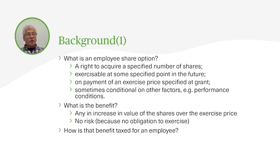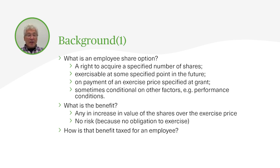Turning to background: what is an employee share option? An employee share option is a right to acquire a specified number of shares, generally in your employing company or the parent company of the employing group. An option is exercisable at some specified time in the future — by exercise I mean that you pay your price and receive your shares. The exercise price is specified at grant, and sometimes exercise is also conditional on performance conditions. The benefit to the employee is any excess in the value of the shares over the exercise price, sometimes referred to as the option gain.